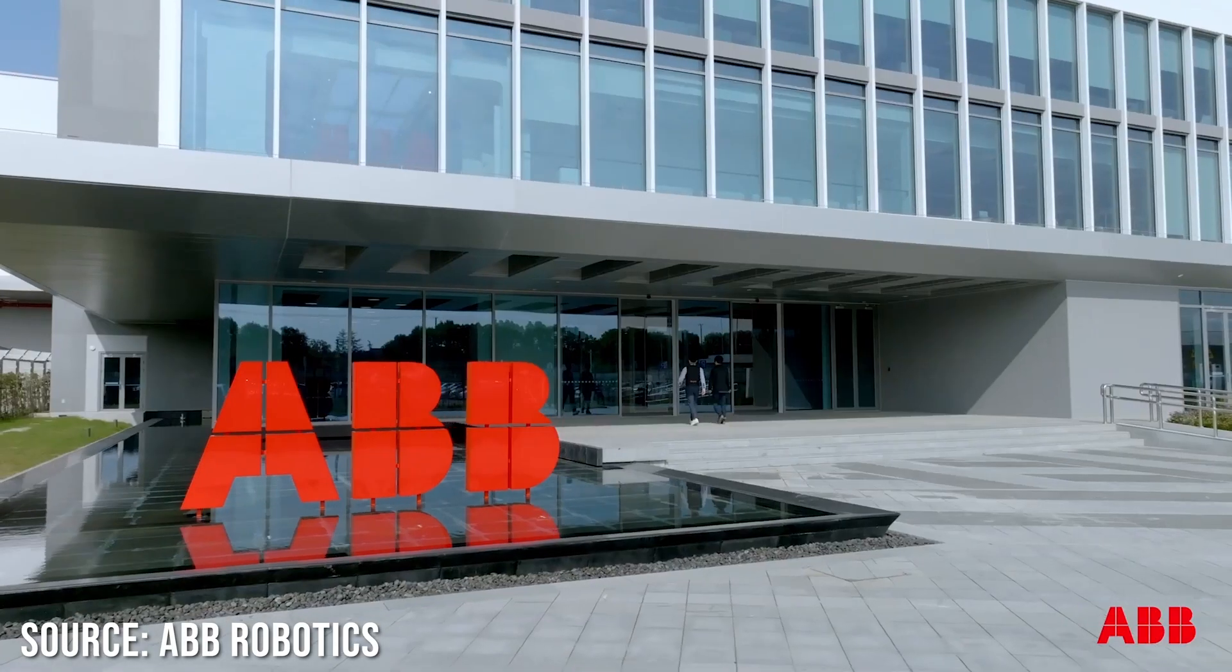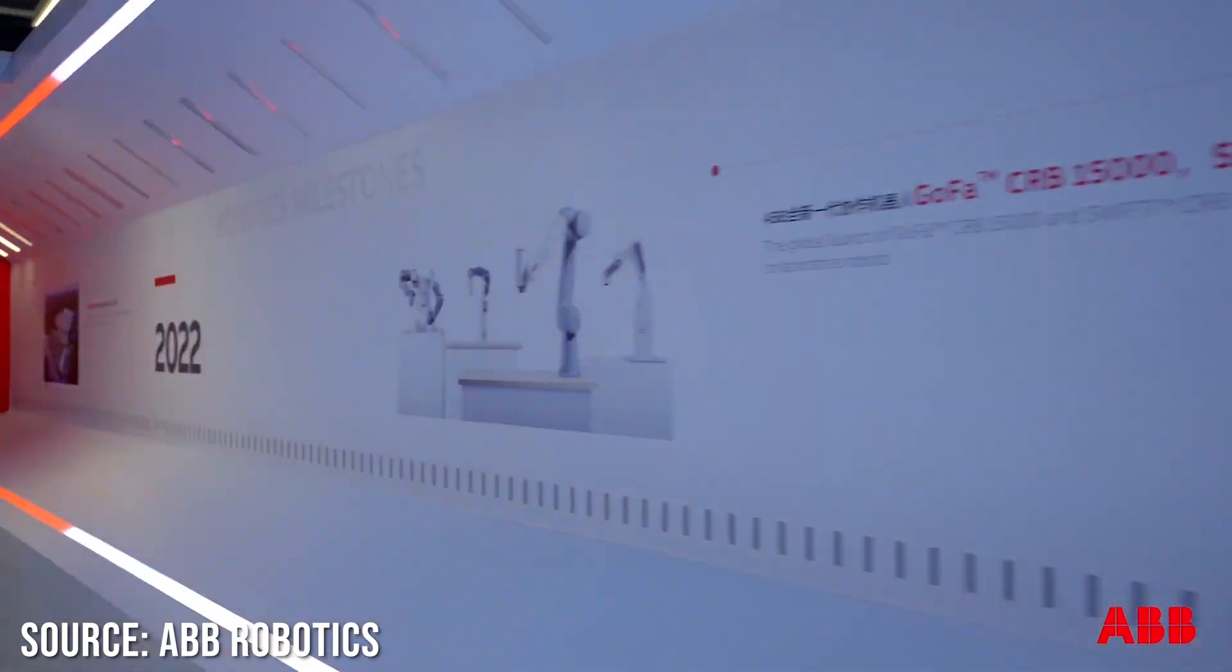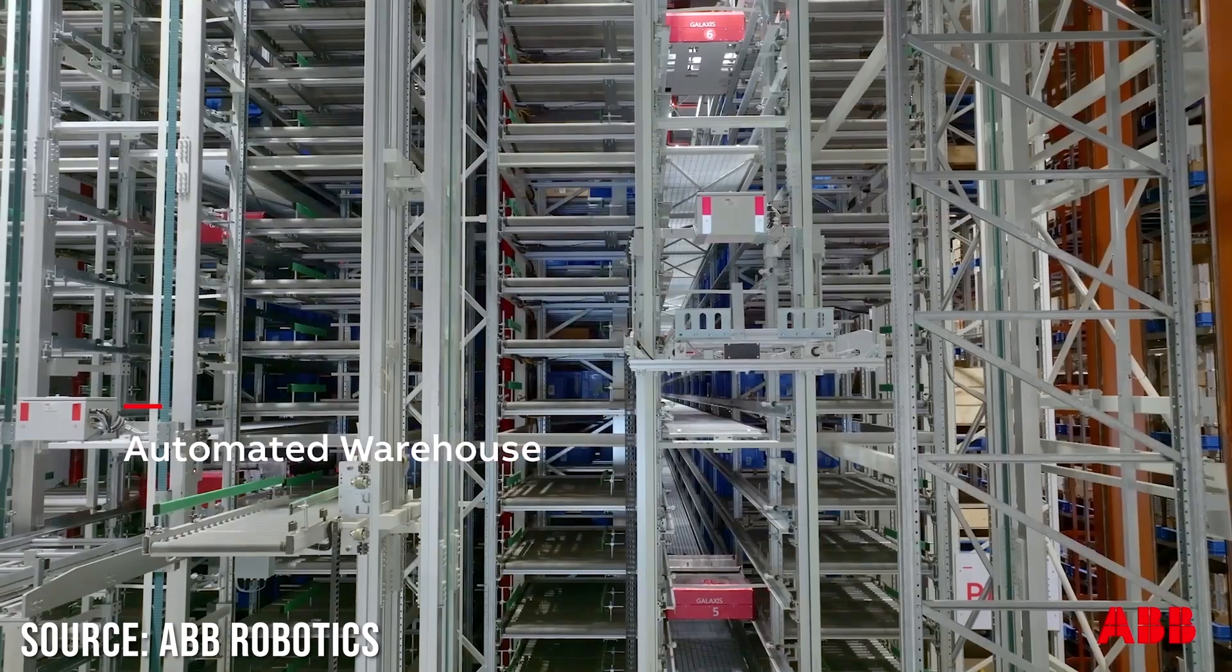But that's not all. ABB has also opened an awesome, fully automated and flexible robot factory near Shanghai. Around US$150 million have been invested in this 67,000 square meter production and research site. ABB's own digital and automation technology will be used to produce the next generation of robots. ABB is committed to an in-China, for-China strategy. Meaning that 90% of all robot solutions ABB sells in China will be manufactured in this factory. China is, of course, a huge growth market and ABB is looking to expand its position there.